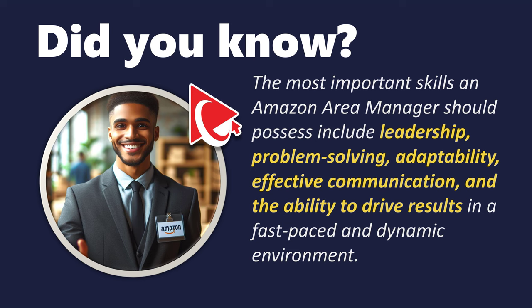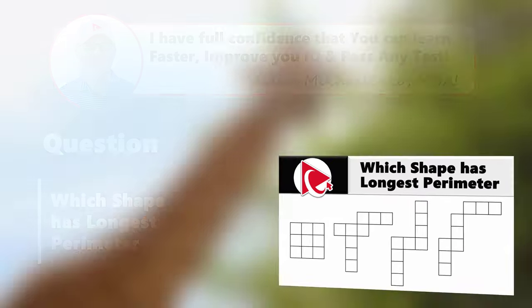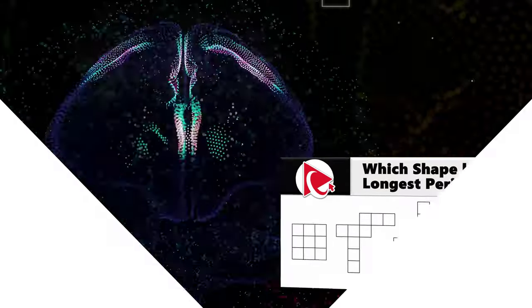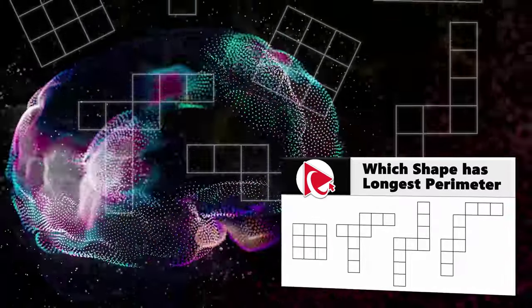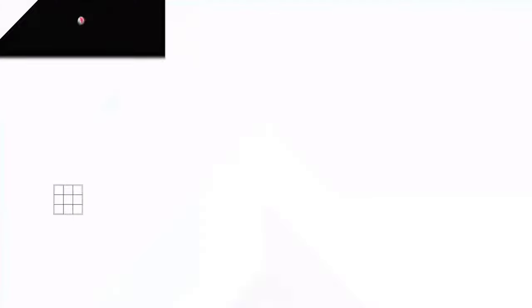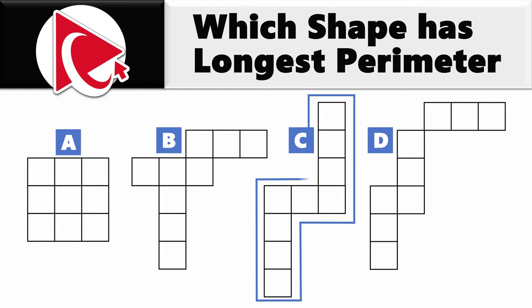Cracking this question is like teaching a giraffe to limbo — a tall order, but once you bend your mind around it, the success is a real stretch. This question might be secretly measuring our ability to handle mental acrobatics with unusually looking shapes. Speaking of shapes, you are now presented with 4 shapes, and you need to determine which has the longest perimeter, selecting from choices A, B, C, and D.